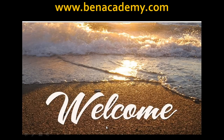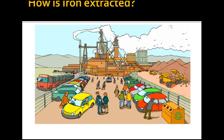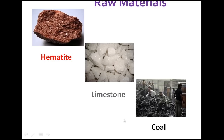Hello students, welcome to Ben Academy. In this short video I am going to explain how iron is extracted from its ore. This is the iron factory. There are three things we should learn: the raw materials required, how they are processed in the industry, and what machineries are used in order to extract iron. Let's see one by one.